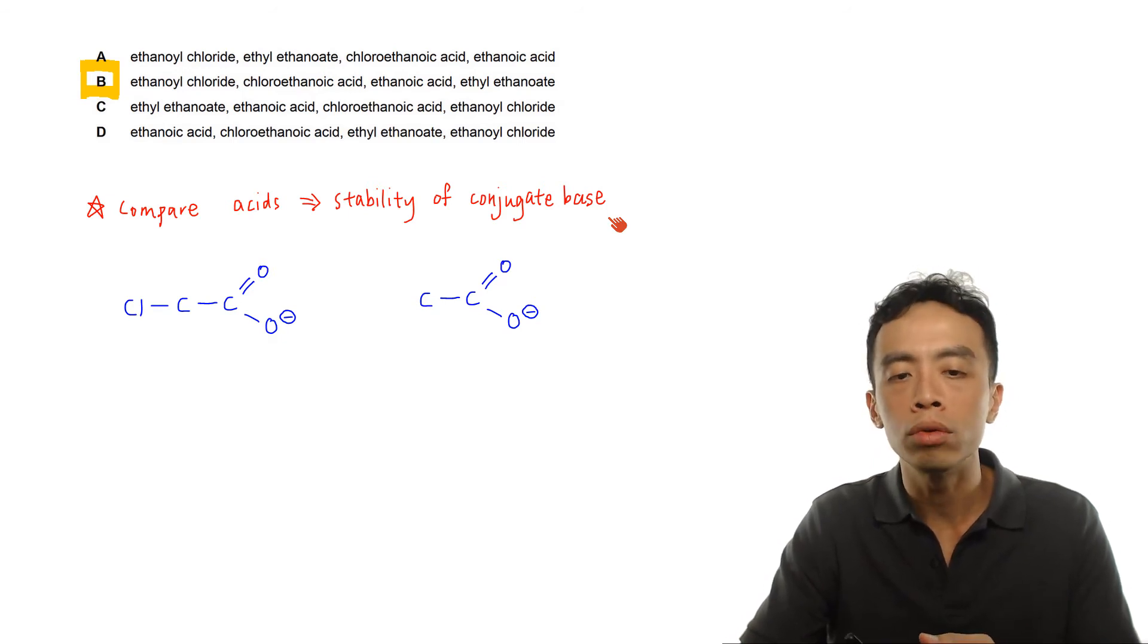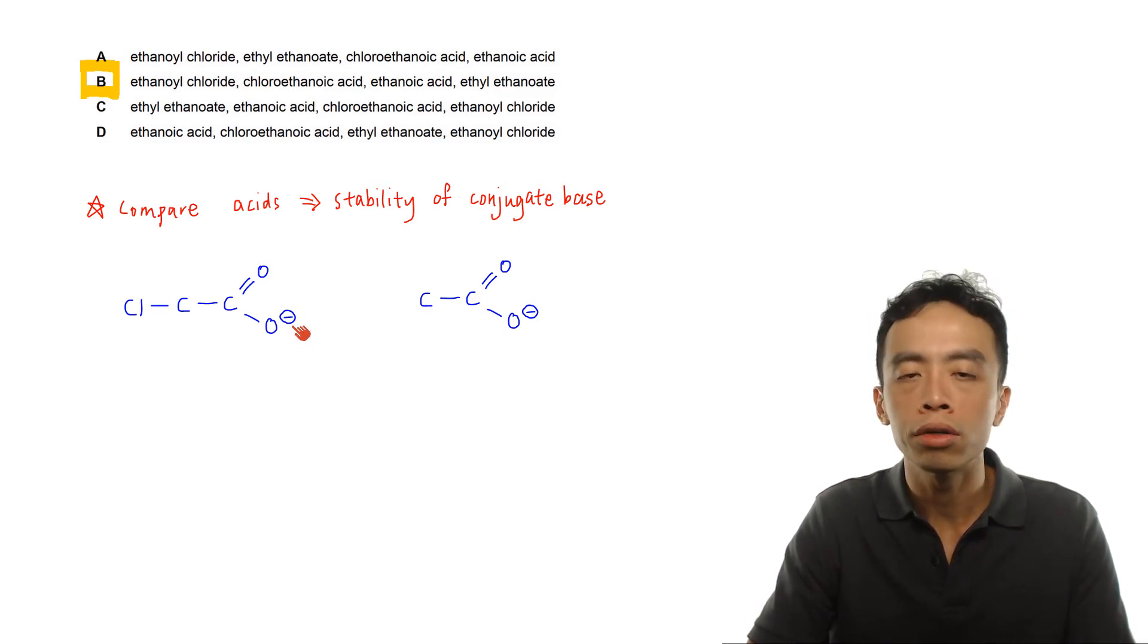We can draw the conjugate bases for both chloroethanoic acid and ethanoic acid. To focus on the stability of the conjugate base, the focus is always on the negative charge on oxygen. If I can disperse or spread this negative charge over a bigger area, then the conjugate base will turn out to be more stable, and in turn the acid will be more acidic.